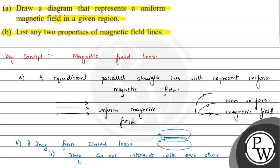Second part: they do not intersect each other. If we consider a magnet here, north and south, the field lines will come from this way. We can see clearly they are not intersecting each other. Magnetic field lines never intersect each other.